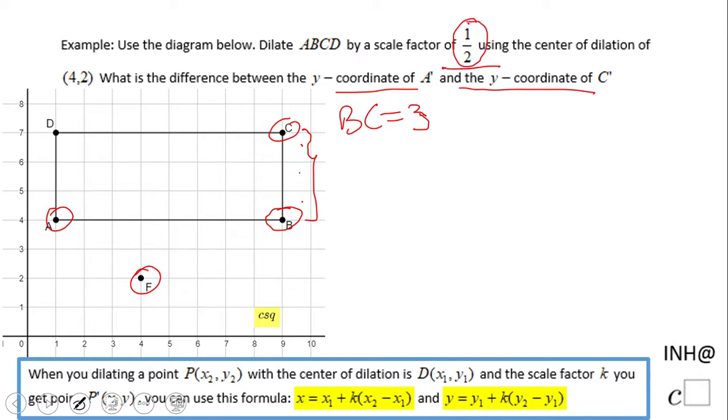We're going to have one-half times three, which is going to be three over two, or one point five. It's up to you how you use it. That is the difference between the y-coordinate of B prime and y-coordinate of C prime.